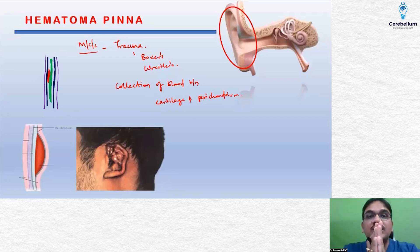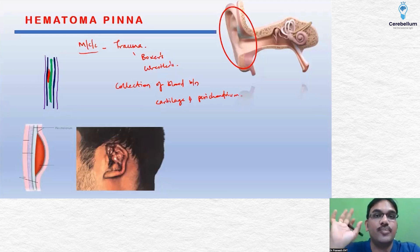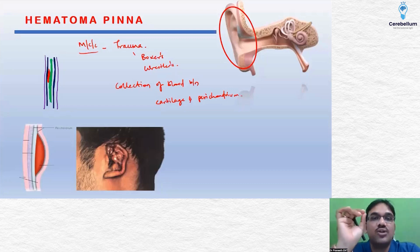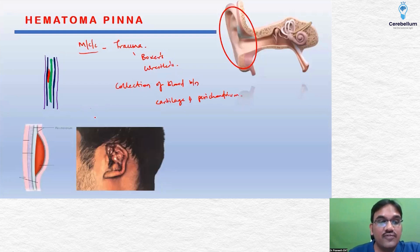The perichondrium is tightly attached to the cartilage, so even a small amount of blood collected in between these two structures will cause intense pain to the patient. This is why patients with hematoma or perichondritis will have severe pain — the slightest amount of collection between these two tightly attached structures causes significant pain.